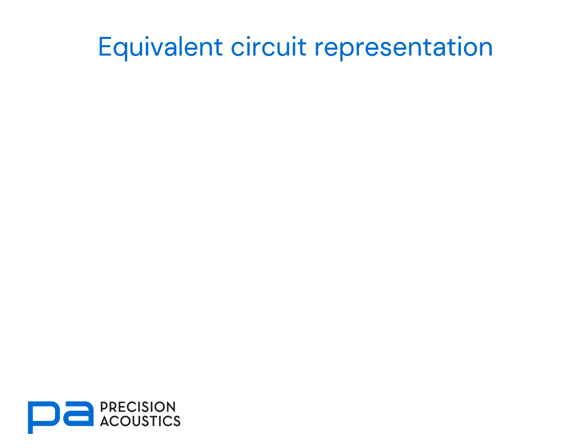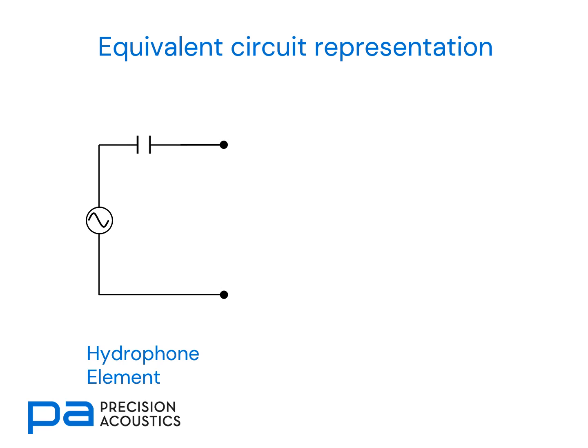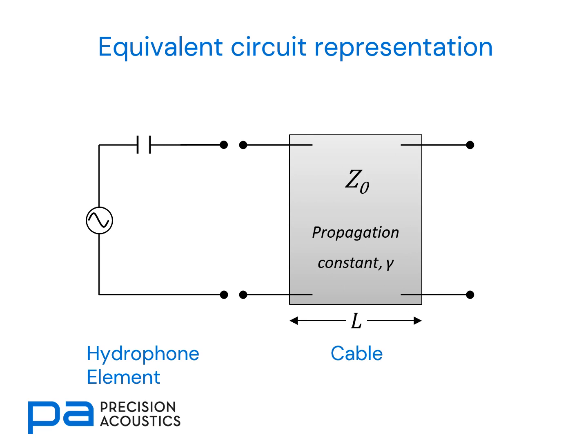Paired with the equivalent circuit representation of a simple hydrophone connected directly to a cable without a preamplifier, we have the hydrophone active element, which comprises a voltage source. In this case, we've represented the source impedance as a simple capacitor. This is usually sufficient for piezopolymer active elements. There is then connection via a cable of known length and known properties, and a load impedance — typically the 1 megaohm or 50-ohm input impedances of a data acquisition system or oscilloscope.